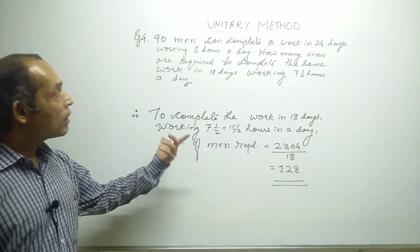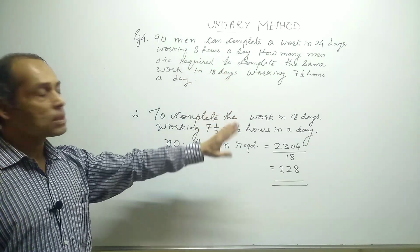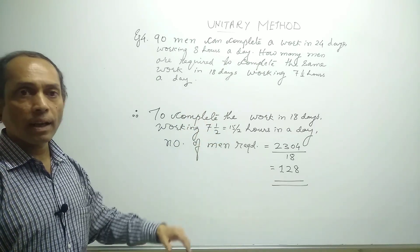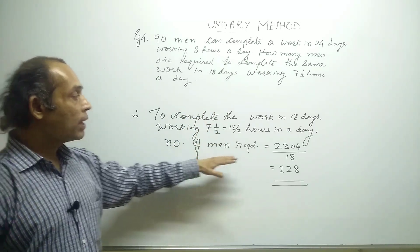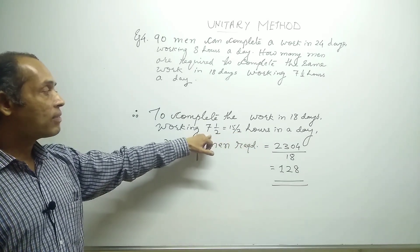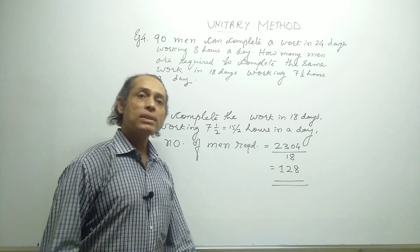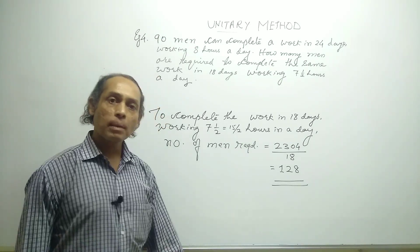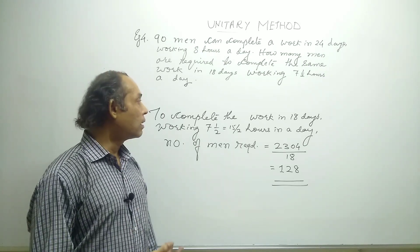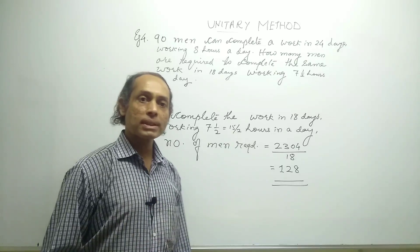As you have seen, applying the unitary method to real-life situations allows us to solve such problems and get the final answer. The number of men required is 128, working seven and a half hours per day for 18 days. Do well in your exams — apply this concept of unitary method to direct and inverse variation problems. All the best, thank you.